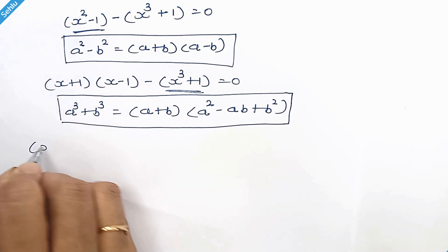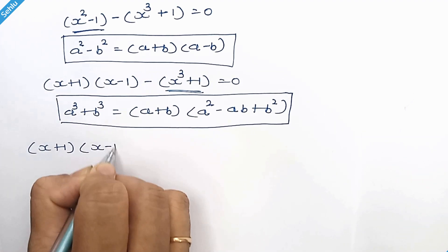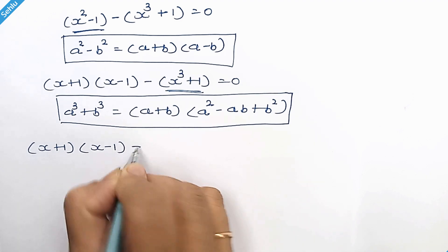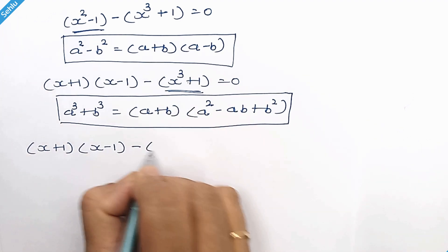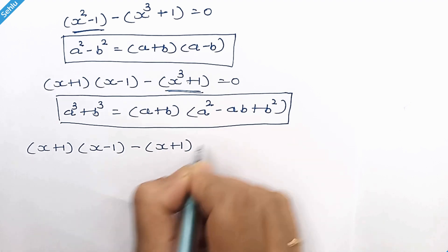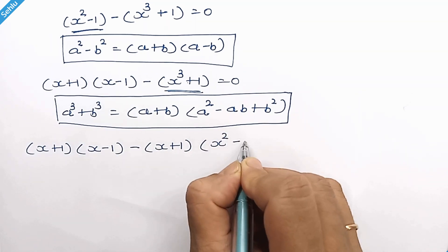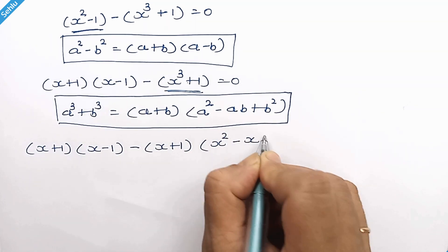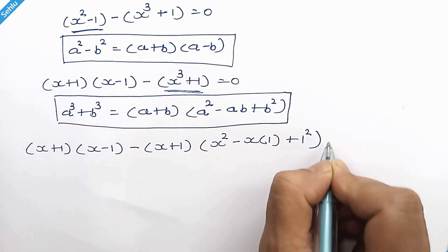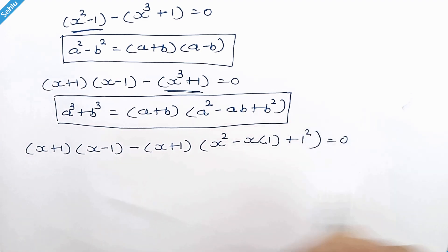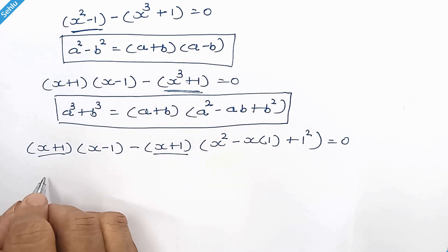So it will be (x plus 1)(x minus 1) minus (x plus 1)(x squared minus x times 1 plus 1 squared) is equal to 0. We can factor out (x plus 1).